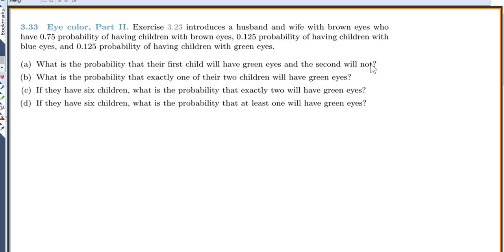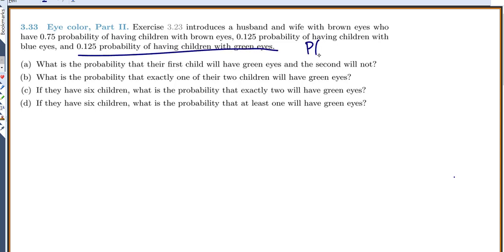This is from problem 3.33. We have a husband and wife with different probabilities of having kids with certain eye colors. We're mostly interested in green eyes. The probabilities are: 0.75 for brown eyes, 0.125 for blue eyes, and 0.125 for green eyes. So the probability of green equals 0.125.